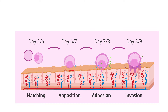The blastocyst attaches to the endometrial epithelium which is adjacent to the embryonic pole. The trophoblast differentiates into two different cell masses: the outer syncytiotrophoblast, which is multinucleated protoplasm, and the inner cytotrophoblast. The finger-like processes of the syncytiotrophoblast extend through the endometrium and invade the endometrial connective tissue.